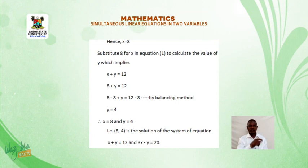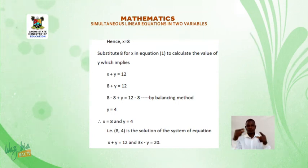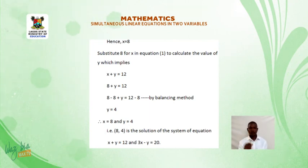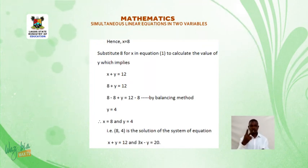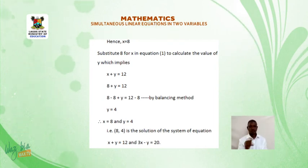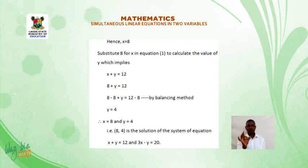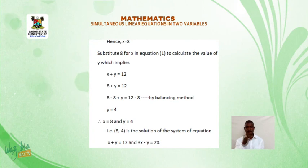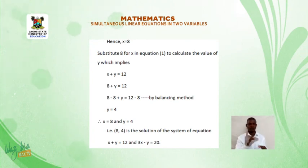Substitute 8 for x in equation 1 to calculate the value of y. x plus y is equal to 12, so 8 plus y is equal to 12. By balancing method, subtract 8 from both sides: y is equal to 4. Therefore, x is equal to 8 and y is equal to 4.